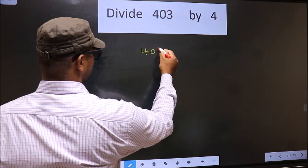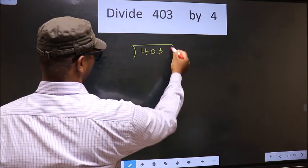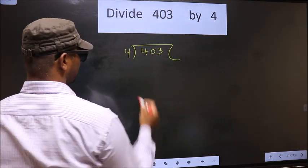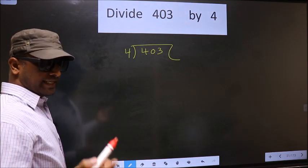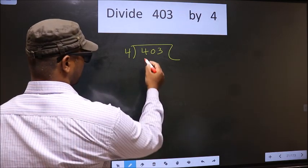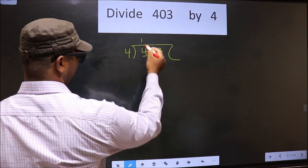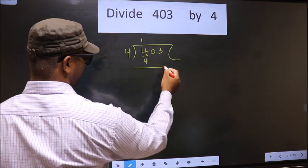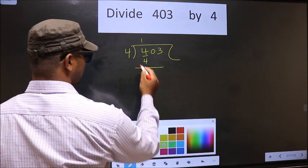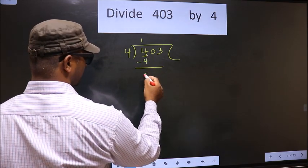That is 4034. Okay. Next. Now, here we have 4. Here also 4. So, we take 4 once 4. Now, you subtract 4 minus 4, 0.